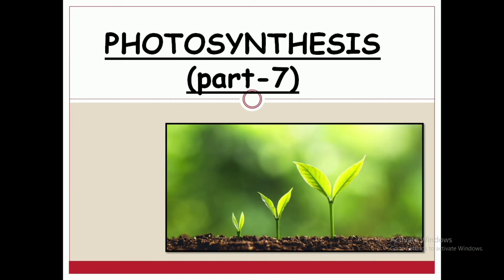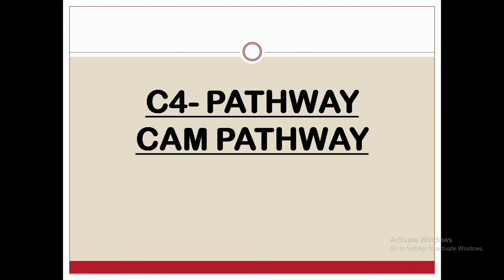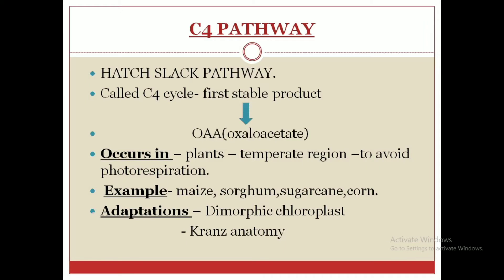Hello everyone, this is the last part of photosynthesis. In this lesson we'll be discussing the C4 pathway and the CAM pathway. The C4 cycle is also given the name Hatch and Slack pathway. It is called C4 because the first stable compound formed in this cycle is OAA, that is oxaloacetate, which is a four-carbon compound.